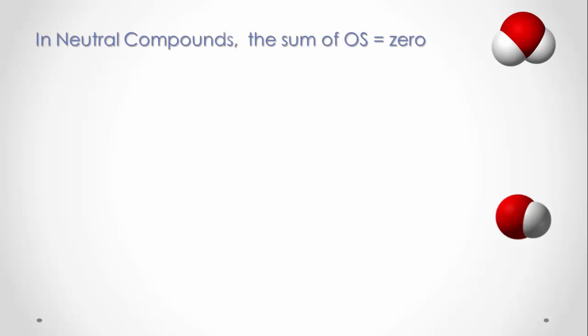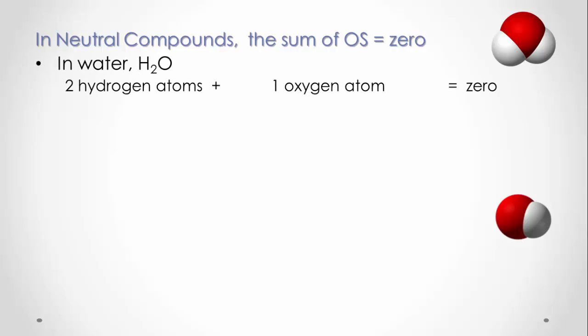Rule five applies to neutral compounds — usually molecules. The sum of all the oxidation states of all the atoms in that molecule will add to give zero. Using water as an example: there are two hydrogen atoms and one oxygen atom. Hydrogen has an oxidation state of positive one and oxygen has negative two, so the expression becomes: two times (+1) plus one times (−2) equals zero.